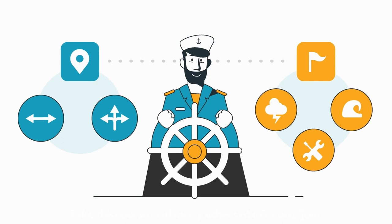A sailor must know two things before he can chart a course: his current location and the location of where he wants to go. Picking a destination may be easy — the Bahamas perhaps if we have to choose — but figuring out the precise distance and direction the ship must travel to get there requires a precise understanding of the exact location at the time of departure.